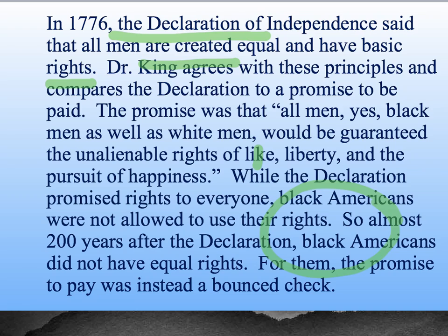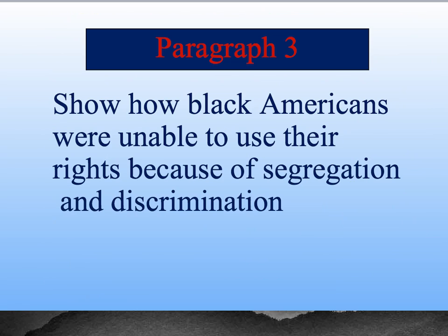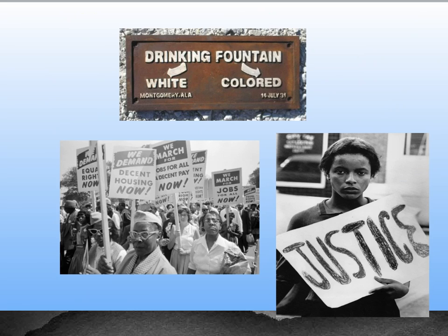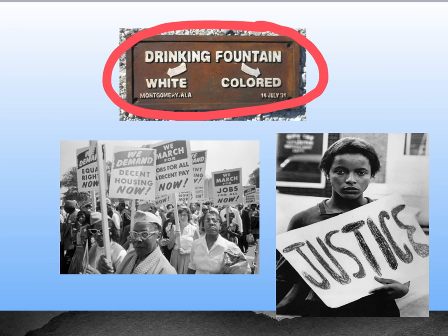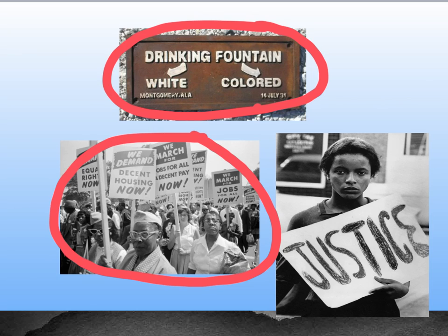Now as we dive into our third paragraph, what I'm going to do is show that Dr. King said yes, but. Yes, he agrees with those principles outlined in the Declaration, but black Americans at this time were not able to use these rights because of what was going on in the country. During the 1960s in the American South, we did see things like signs separating the races — a white drinking fountain and a colored drinking fountain. In order to work against this, we did see a lot of protests beginning in the late 50s and continuing into the 60s where people were demanding things like decent housing, decent pay, jobs for everyone, and essentially justice — wanting to be treated equal just as outlined in the Declaration of Independence.